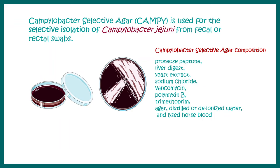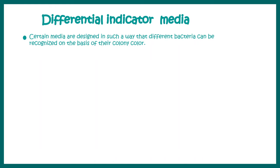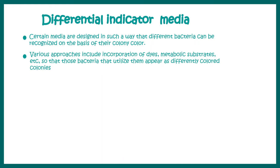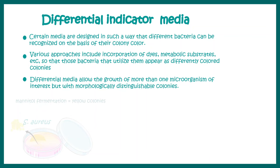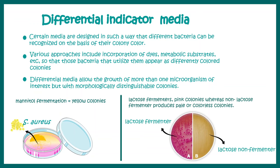Let's talk about another type — differential indicator media, also known as chromogenic media. These media are designed so that different bacteria can be recognized based on their colony colors, using chromogenic substrates that produce different colors upon metabolism. A simple example is Mannitol salt agar, where mannitol fermentation leads to a yellow-colored colony characteristic of Staphylococcus aureus. Similarly, MacConkey agar allows discrimination of lactose fermenters versus non-fermenters based on colony color.